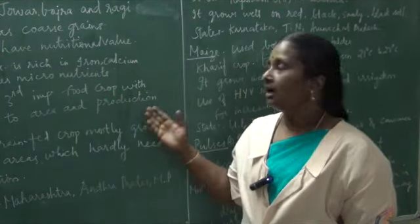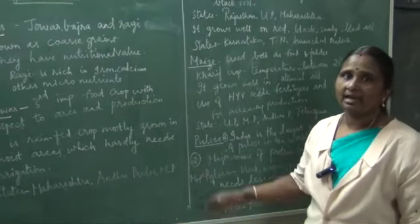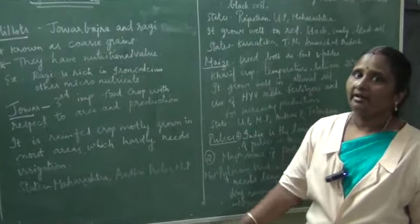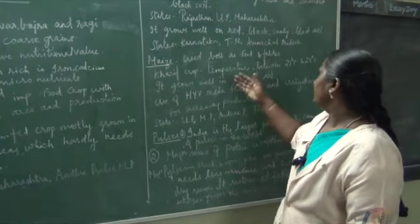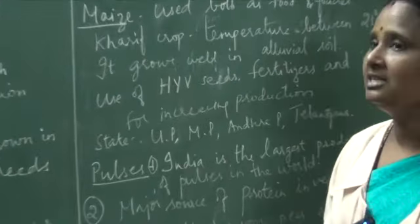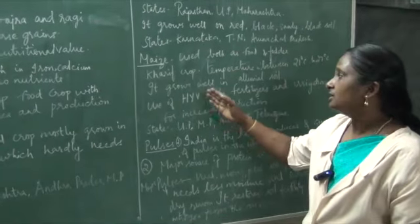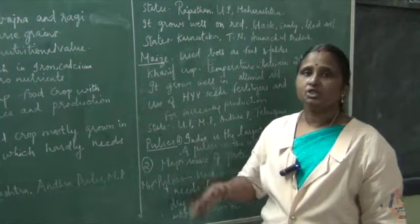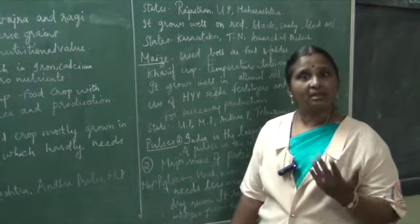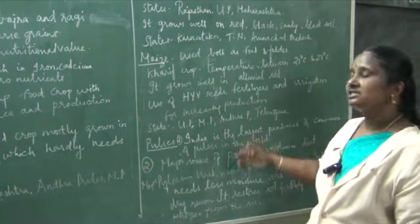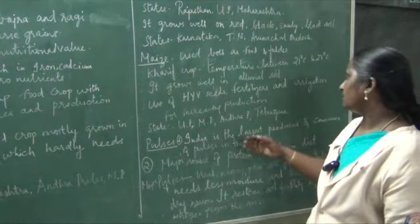Maize is a crop used for both food and fodder. It is a Kharif crop, sown on the onset of monsoon and harvested in September to October. The temperature for maize should be between 21 and 27 degrees Celsius, and it grows well in alluvial soil. Maize can be grown using HYV seeds — High Yielding Variety seeds — where production can be doubled with fertilizers and irrigation. States producing maize include Uttar Pradesh, Madhya Pradesh, Andhra Pradesh, and Telangana.